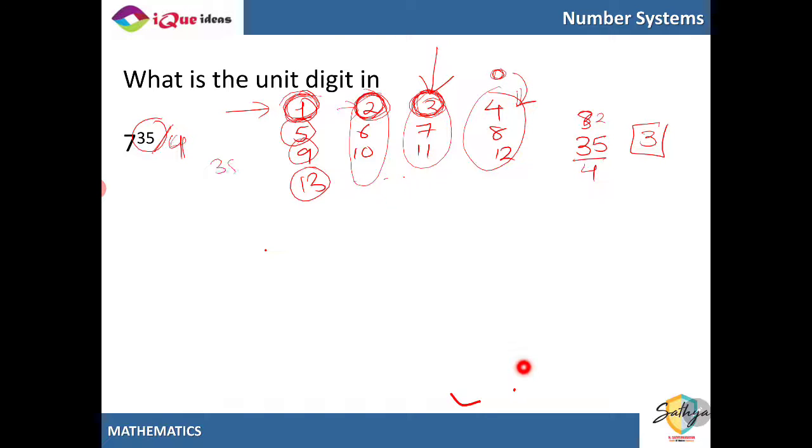So as we have seen, 35 divided by 4 yields a remainder 3. So it is the same as the unit digit of 7 to the power 3. As 7 cube ends in 3, so 7 raised to 35 will also have the units place digit as 3.